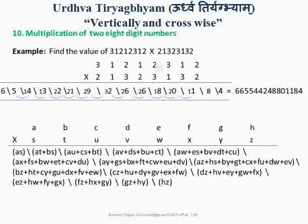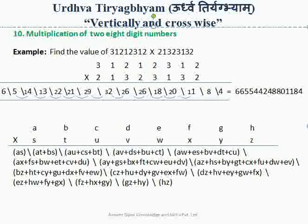Here we have taken A, B, C, D, E, F, G, H as our first number. These different alphabets represent the digits 0 to 9. The second number is S, T, U, V, W, X, Y and Z, which also represents 0 to 9. Any numerical value can appear in place of these different alphabets.